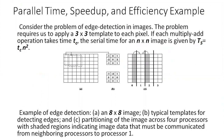A very important and famous example is edge detection. As shown in this figure, the 8×8 image is shown in figure A, and in figure B, a typical template for detecting the edges, and in figure C, partitioning of the image across 4 processors with the shaded region indicating image data that must be communicated from a neighboring processor to processor 1.